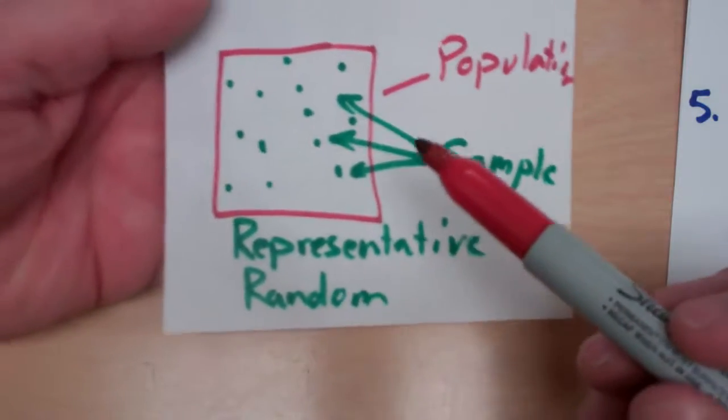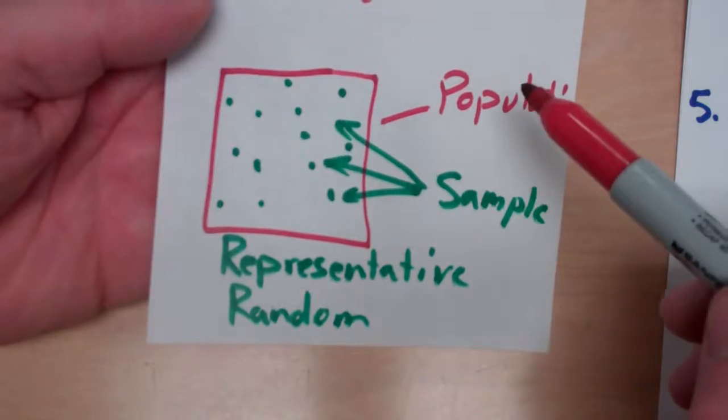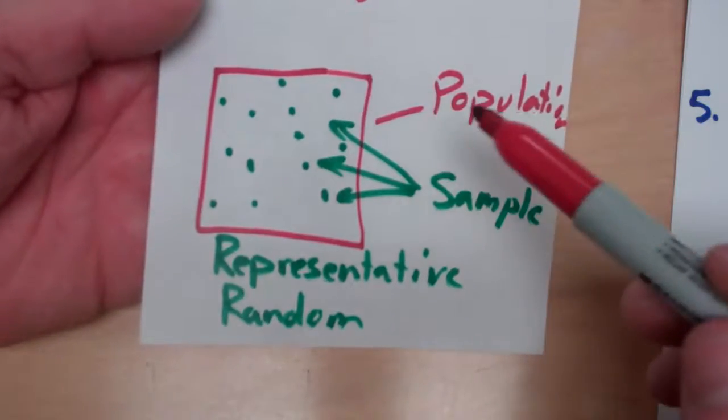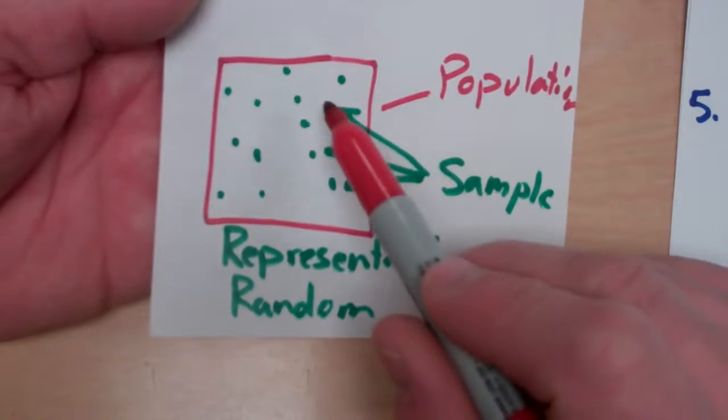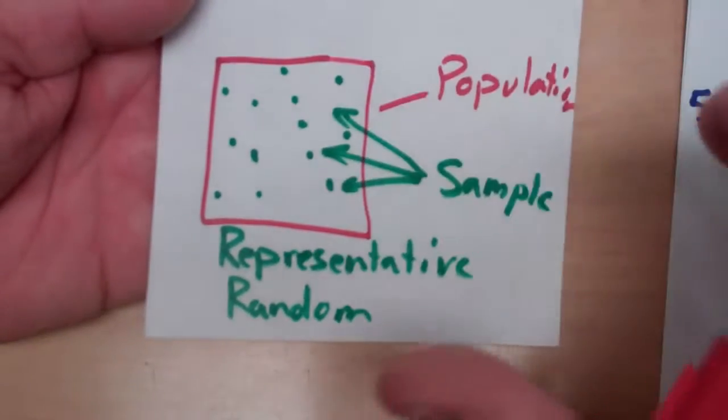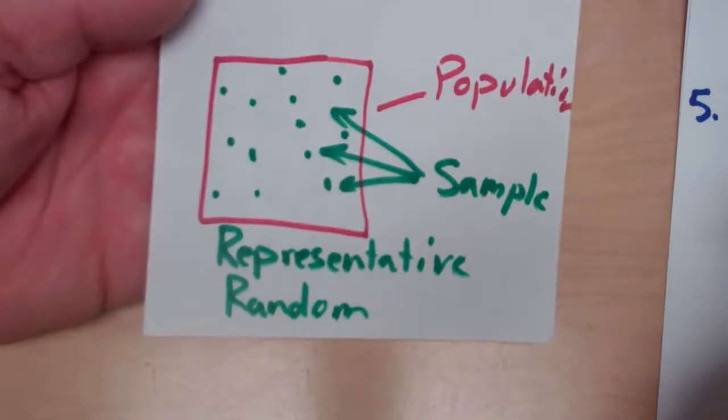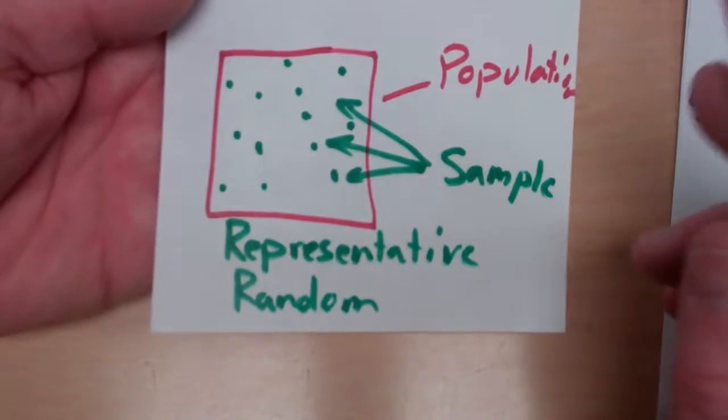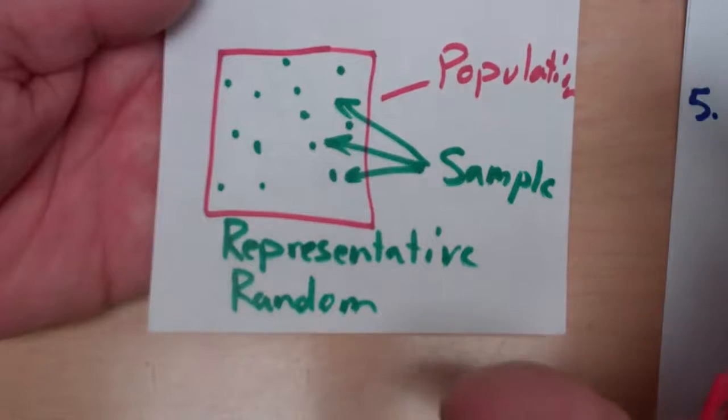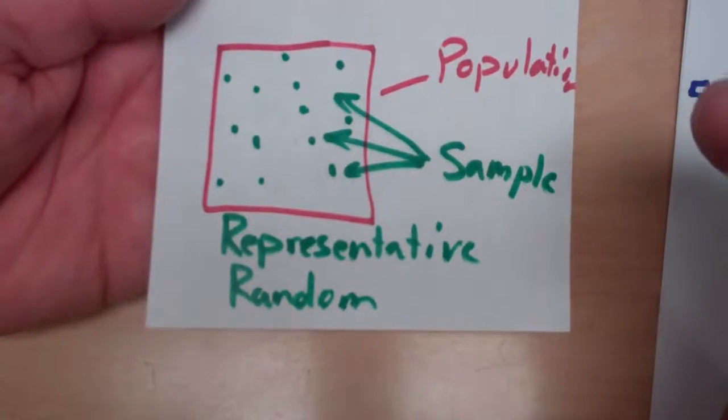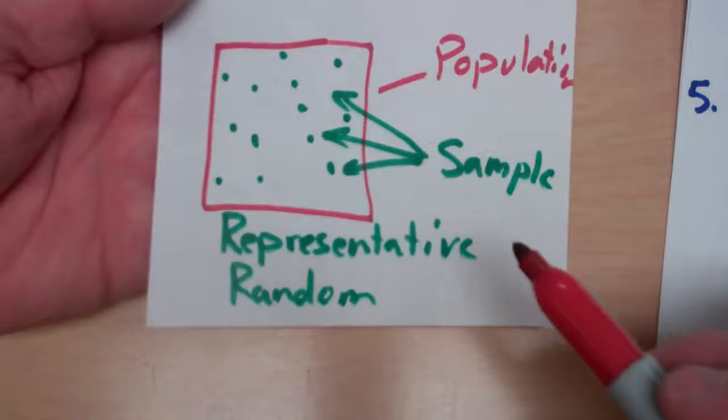Then when I talk about the sample, a lot of times, instead of talking to everybody, surveying everybody or getting data from everybody, we take a sample. So we only choose a certain number because it's just not feasible or convenient to be able to get data from everybody. So we choose a sample from them.